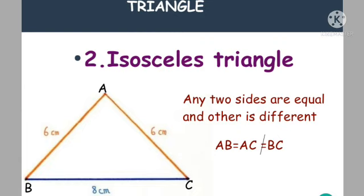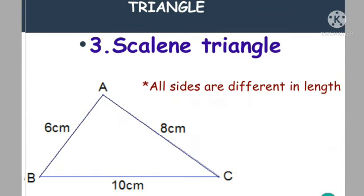Next is the isosceles triangle. If you see this triangle, two sides are 6 centimetres in length and one side is 8 centimetres. These types of triangles are called isosceles triangles. The third one is the scalene triangle — in this, all three sides are different in length. One side is 6 centimetres, one is 8 centimetres, and another is 10 centimetres. These types of triangles are called scalene triangles.